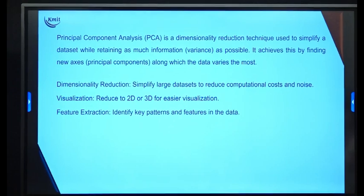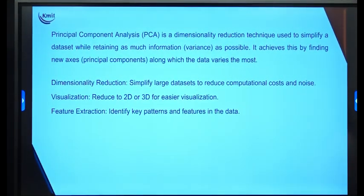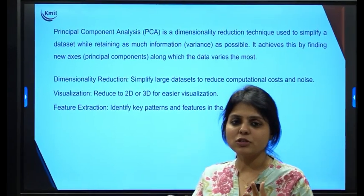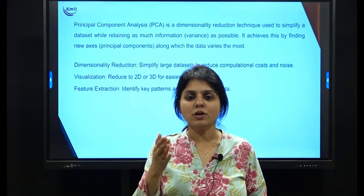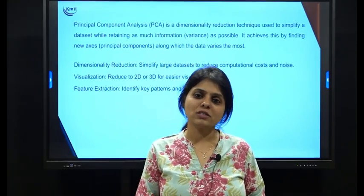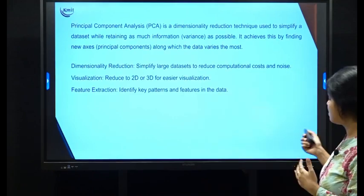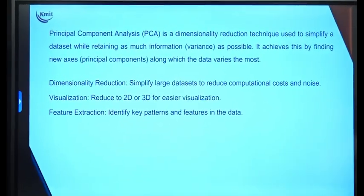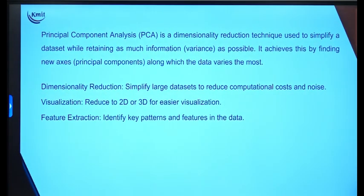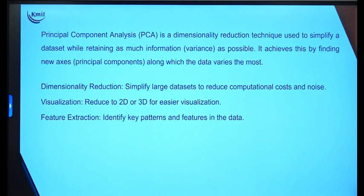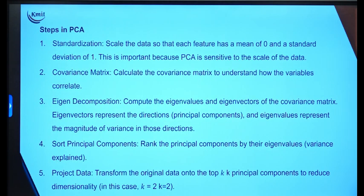PCA is a dimensionality reduction technique used for supervised and unsupervised machine learning algorithms. When you have a dataset with more features, the computational cost increases, so we reduce features of less importance to improve accuracy without changing the input information. It retains variance by finding new axes — the principal components — along which the data varies the most, simplifying large datasets, reducing noise, and enabling 2D or 3D visualization and feature extraction.